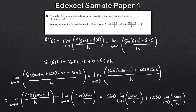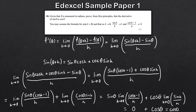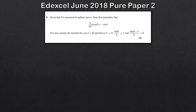Now we consider the behavior of these individual limits. As h tends to 0, cos h minus 1 over h tends to 0, so sine θ times 0 gives us 0. And as h tends to 0, sine h over h tends to 1, so cos θ times 1 gives us cos θ. Therefore f prime of theta equals cos theta — that's our final result, which is exactly what we needed to prove.